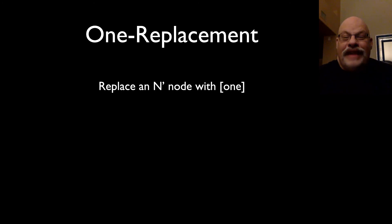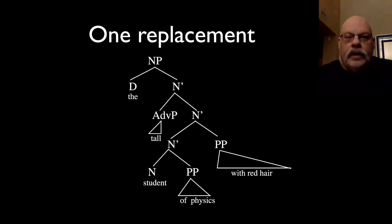All right. And we can now state the rule that we had before that we saw in effect in those sentences we were looking at, which is the one replacement rule, which says you can replace any N bar node with the word one. Notice it's not noun and it's not noun phrase, and that will become important in a minute. So the one replacement rule particularly targets this intermediate category, N bar.